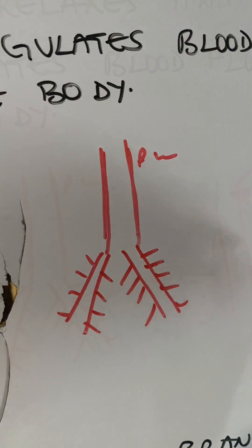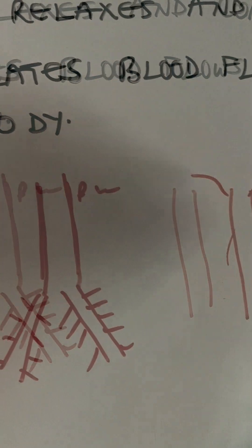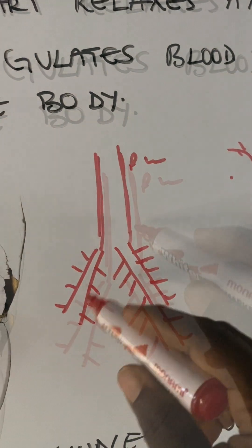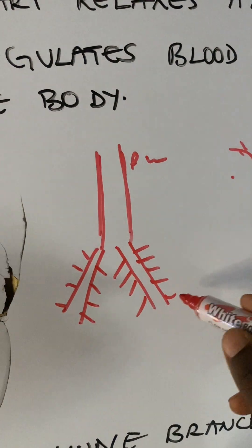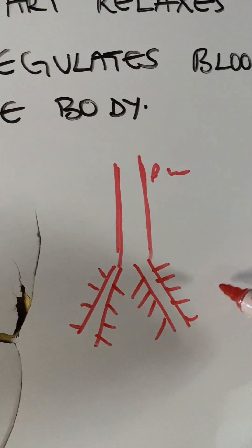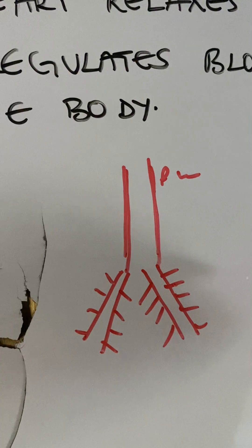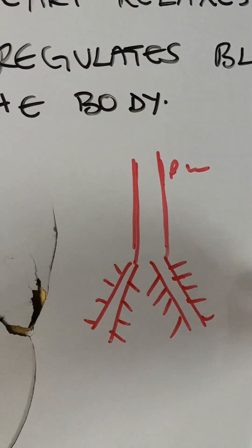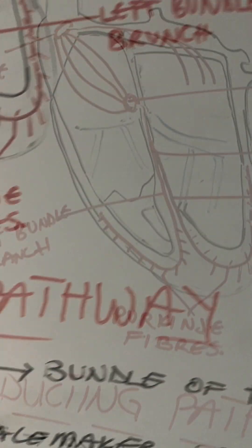You already know how a tree looks — the stem, the branches, and the leaves. But the bundle of His, the bundle branches, and the Purkinje fibers look like that turned upside down.